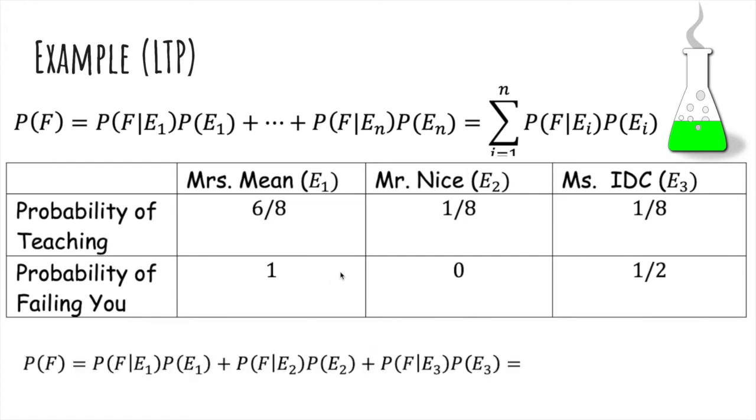Let's use the definition. The probability of fail is the probability of fail given that you had Mrs. Mean, which is 1, times the probability you had Mrs. Mean, which is 6/8, and so on. 0 times 1/8 plus 1/2 times 1/8. It takes a weighted average: the probability of fail in each of the cases times the probability you actually end up in that case. That gives you a high probability of failing, which we expected, which is bad.